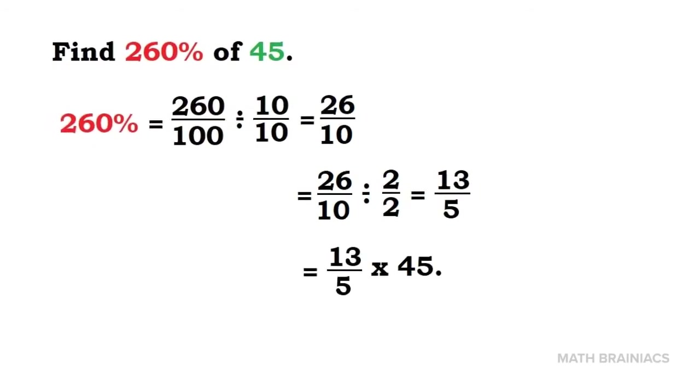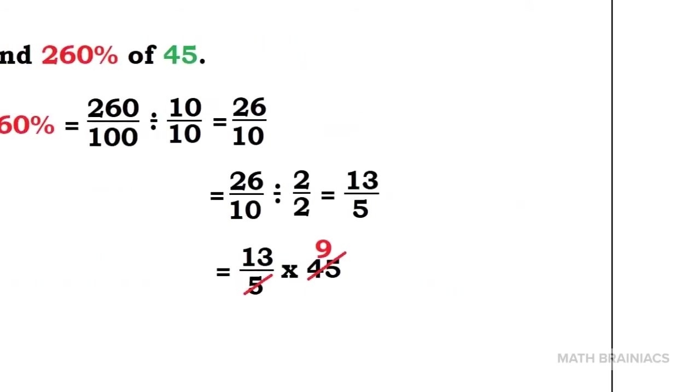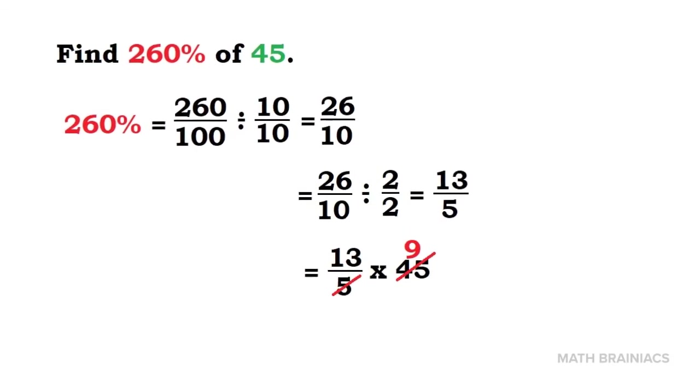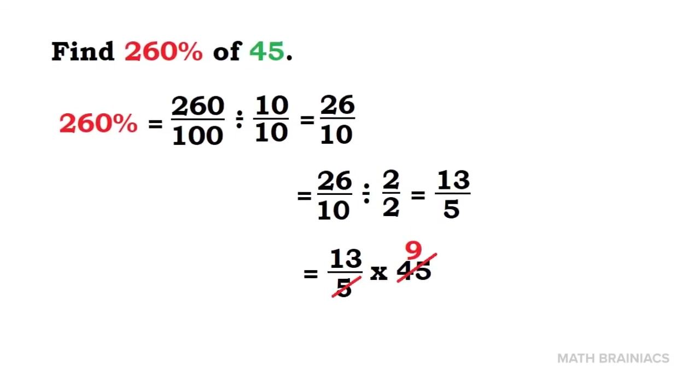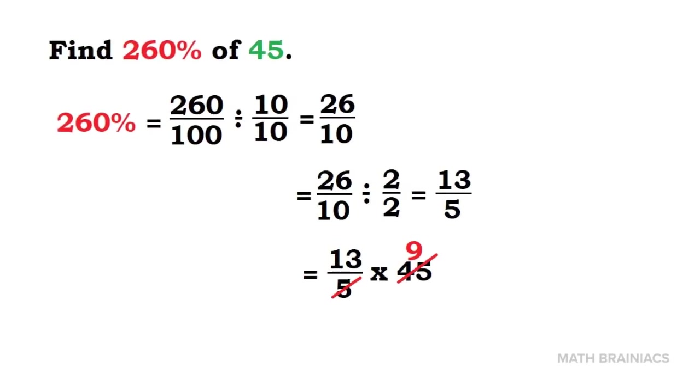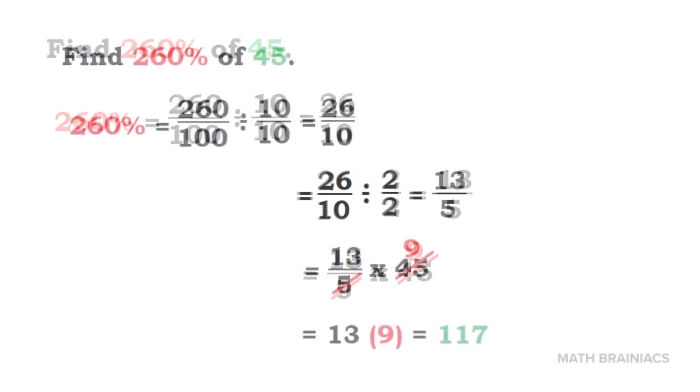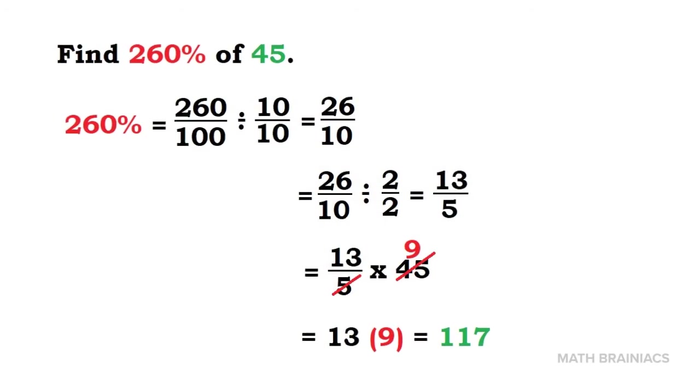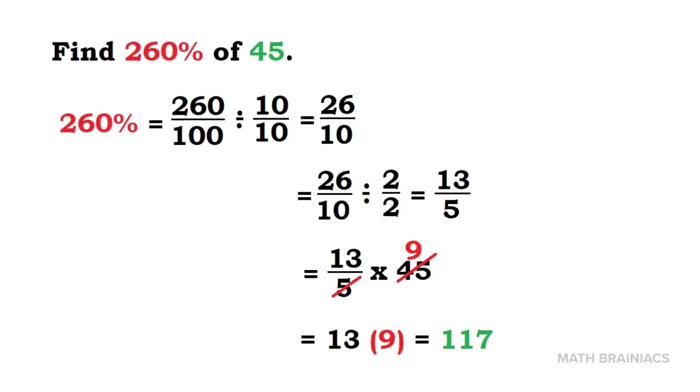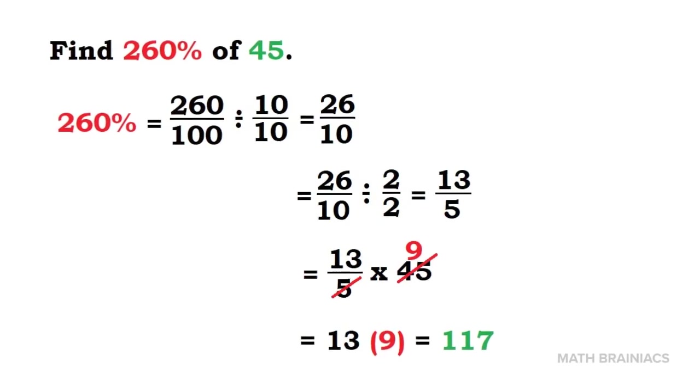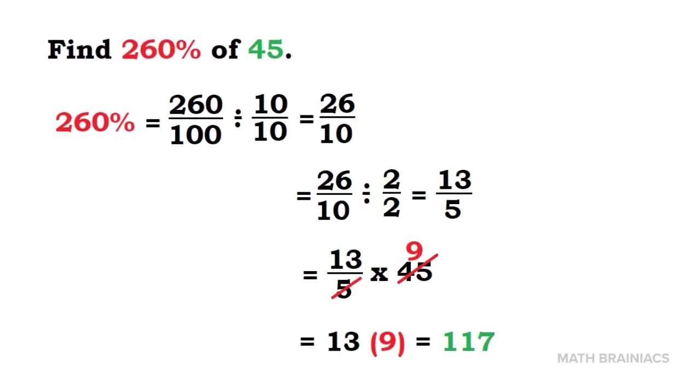We can now multiply 13 over 5 by 45. We can cancel out the 5 and 45 since they have common factor which is 5. Therefore, 5 in 5 is 1 and 5 in 45 is 9. Hence, to simplify 13 by 9, it will give us 117. Therefore, 260% of 45 is 117.